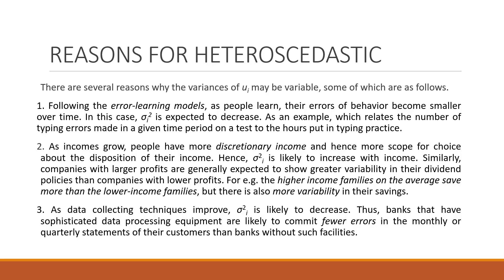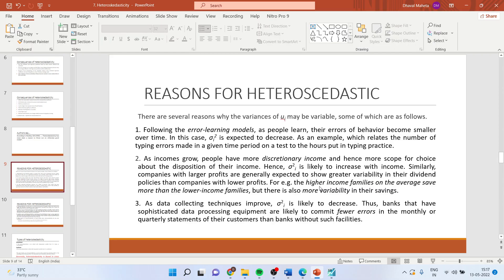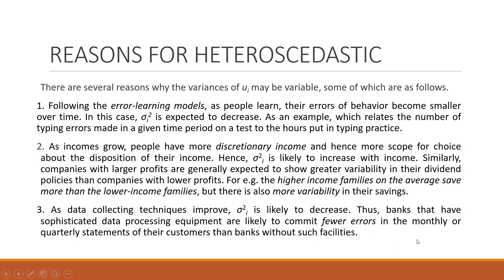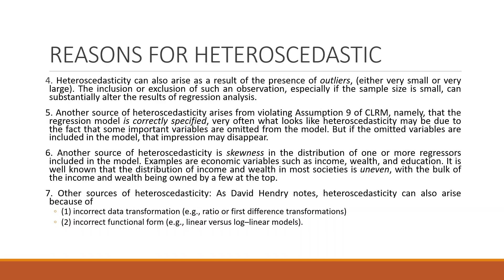Another example is that higher-income families on average save more than lower-income families, but there is also variability in their savings. As data collection techniques improve, sigma squared is likely to decrease. Banks that have sophisticated data processing are likely to commit fewer errors in comparison to those that don't have such facilities. Heteroscedasticity can also arise from the presence of outliers — the more the outliers, the greater the chances of heteroscedasticity.